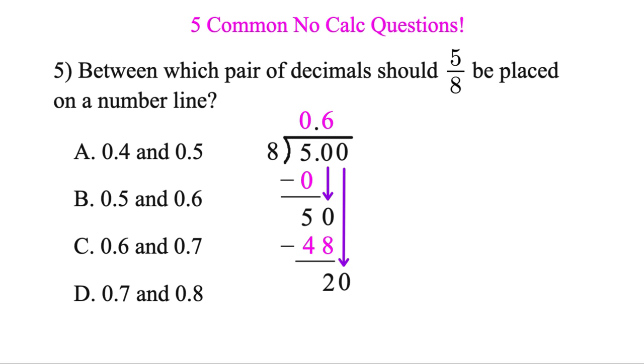8 into 20, that'll go twice. 2 times 8 is 16. Now we could keep going with this, but actually we're done. Because 0.62, that's going to fit between 0.6 and 0.7 on the number line. So that's our answer there.